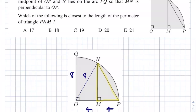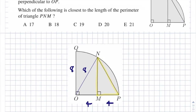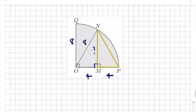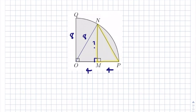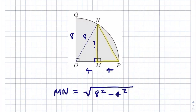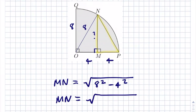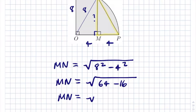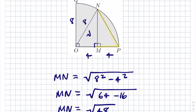MN is perpendicular to OP, so there's a right angle. We have a right-angle triangle with base OM = 4 and hypotenuse ON = 8. Using Pythagoras: MN = √(8² - 4²) = √(64 - 16) = √48.